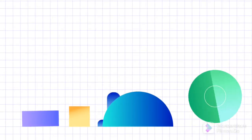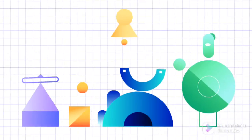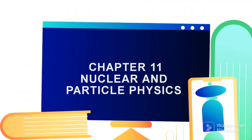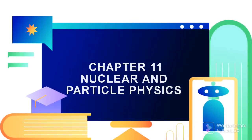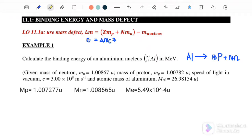Hello, welcome back to my channel. Today we are going to discuss chapter 11, nuclear and particle physics. In this video, we are going to discuss 11.1, binding energy and mass defect.